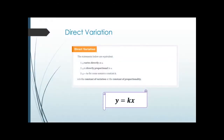For direct variation, these statements are equivalent: 'y varies directly as x,' 'y is directly proportional to x,' or 'y equals k times x.' K is always that constant of variation — a constant we need to find. There's a relationship between x and y where y is simply equal to something times x.